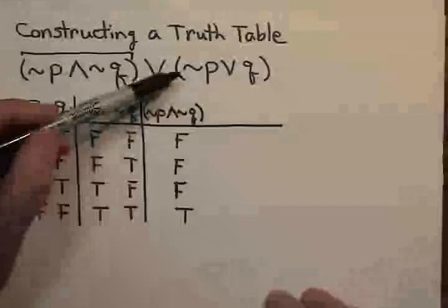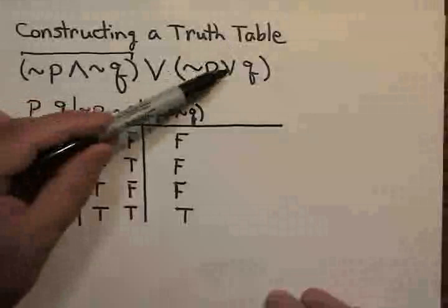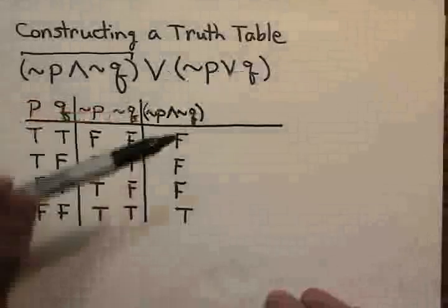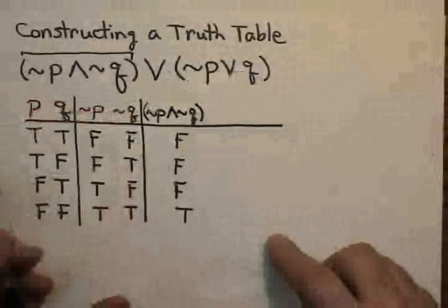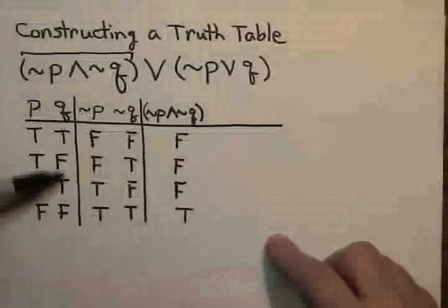Now, I want to create the column with a not P in a disjunction with Q. Now, I already have those columns in existence, so I don't need to repeat them. I just need to look at the not P column along with the Q column.